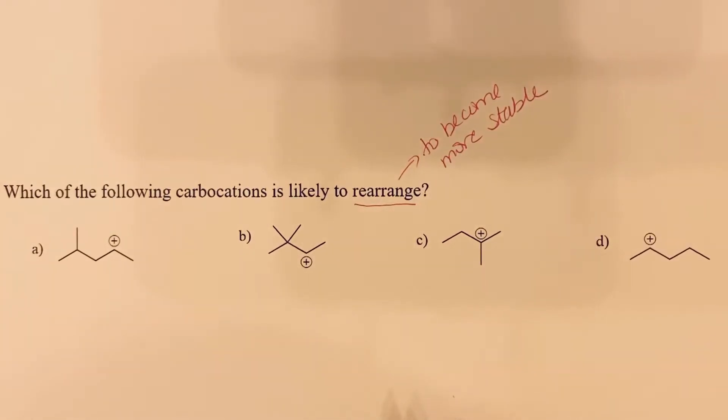So we need to remember our stability trends for carbocations. Like alkenes, they are stabilized by the presence of alkyl groups on the adjacent carbon atoms, and so if our carbocations are more substituted, they are more stable.